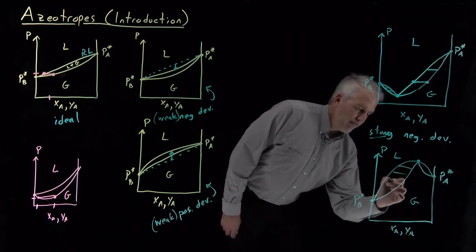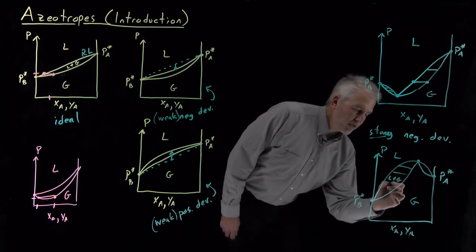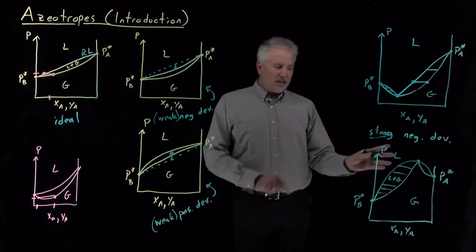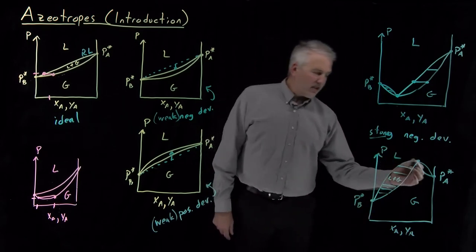So again, this coexistence region must be a liquid and gas coexistence region. The tie lines must connect liquid on one side and gas on the other side.